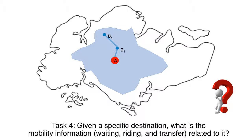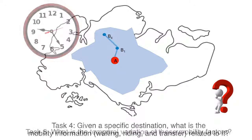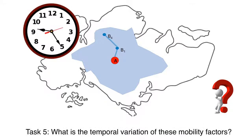Task 4: Given a specific destination, what is the mobility information — waiting, riding, and transfer — related to it? Task 5: What is the temporal variation of these mobility factors?